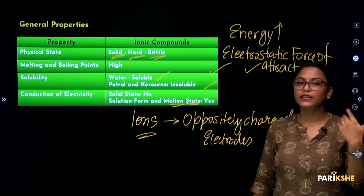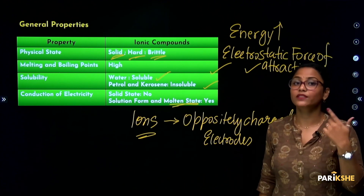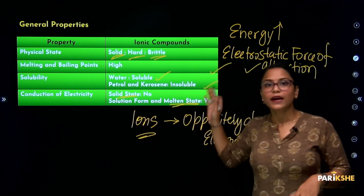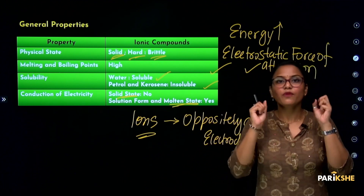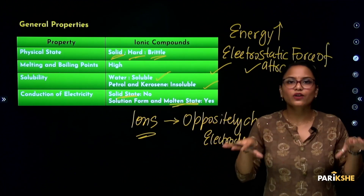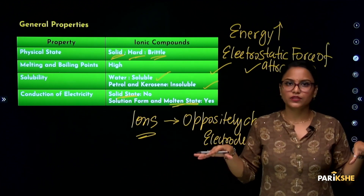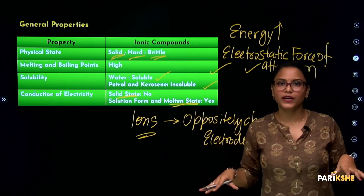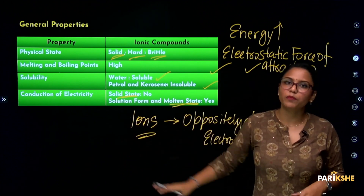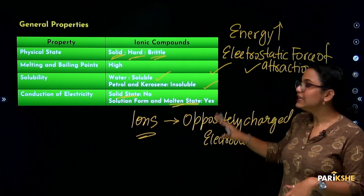However, in the solid state, the electrostatic forces of attraction are very strong, so the ions cannot move. In the molten state, the ions are separated and can move toward the electrodes. So in the solid state, ionic compounds do not conduct electricity.